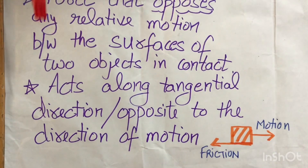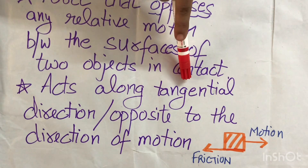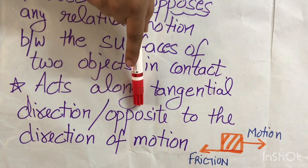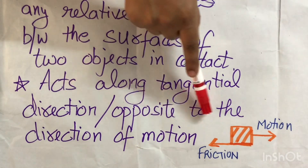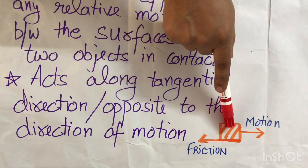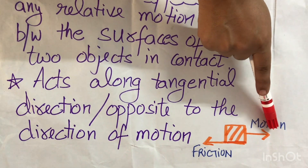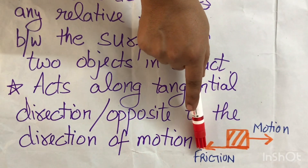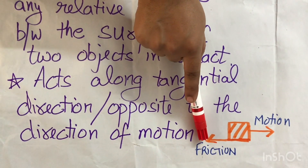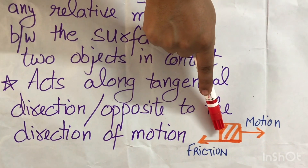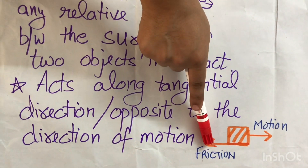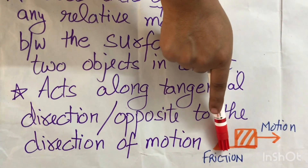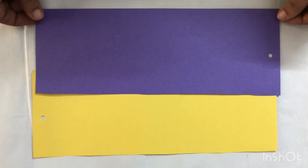Since friction is a vector quantity, it will act along the tangential direction — that means it will be opposite to the direction of motion of the object. For example, if this is a box moving in one direction, the friction will act in the opposite direction, between the two surfaces where the box is kept — that is, between the ground and the box — parallel to the surface.